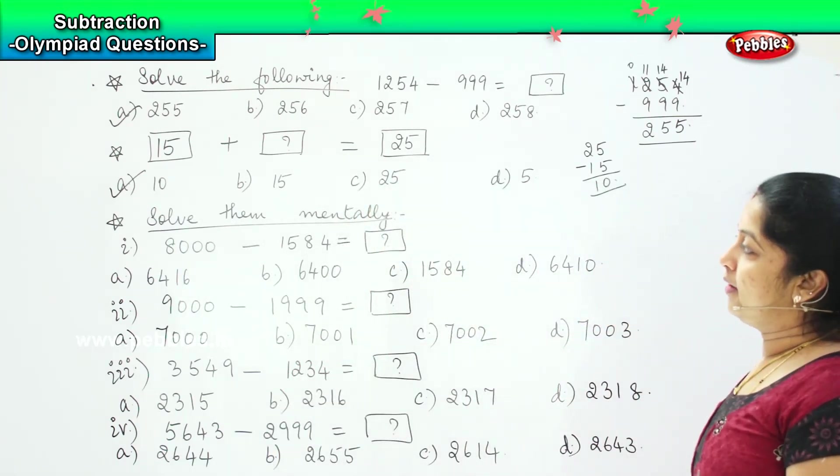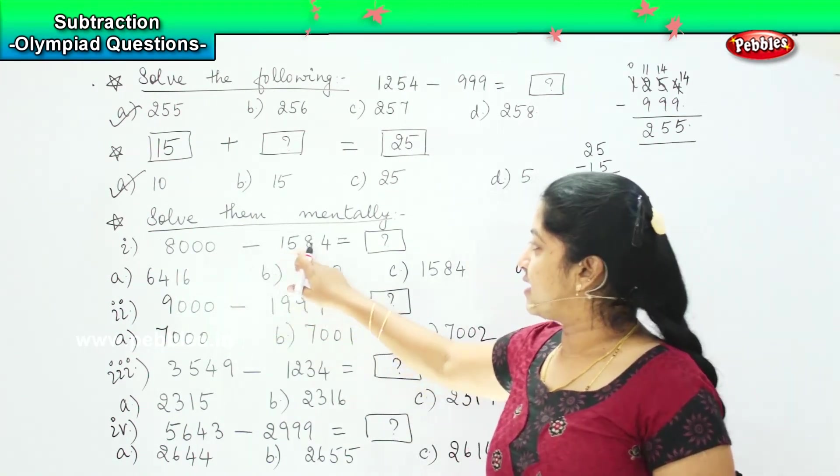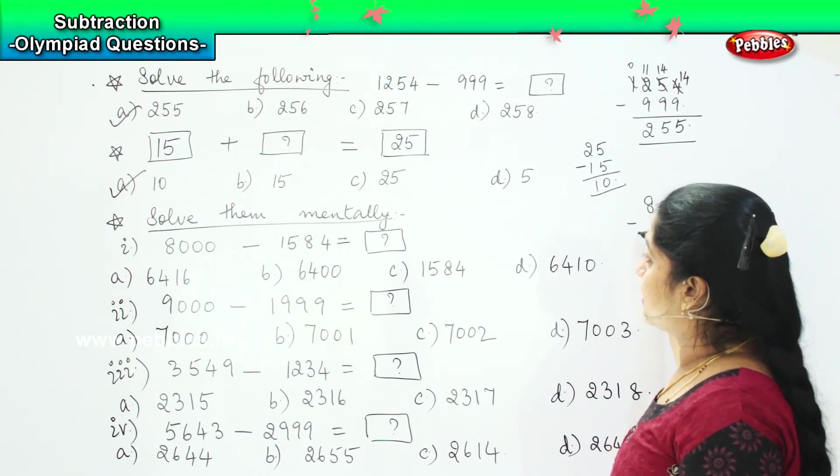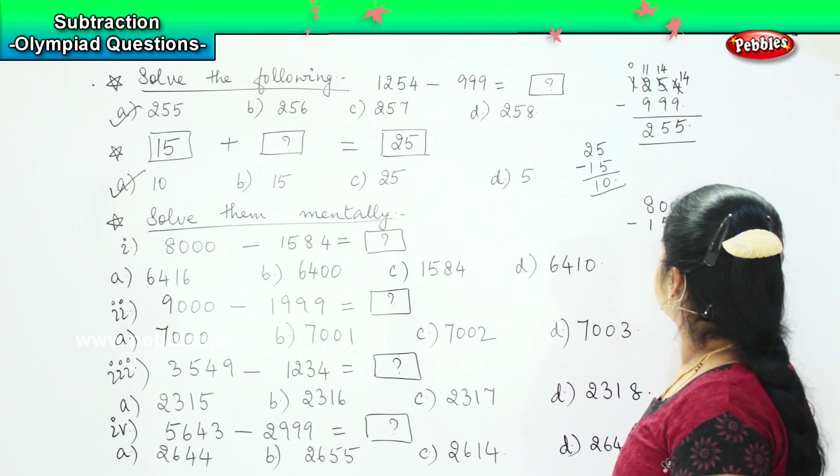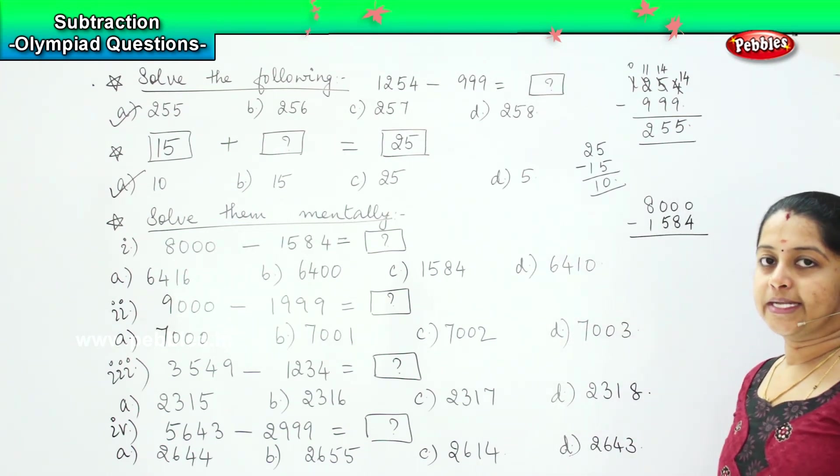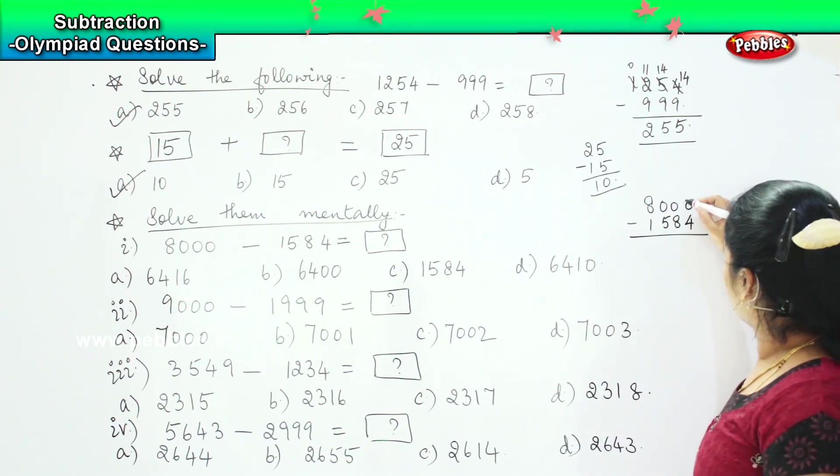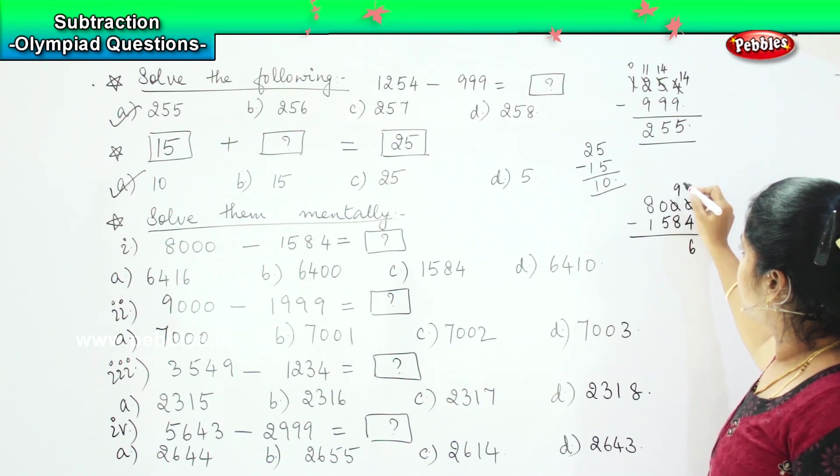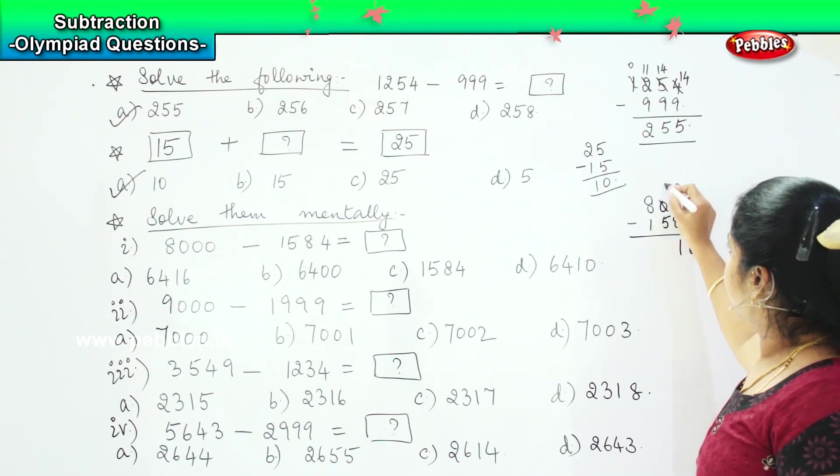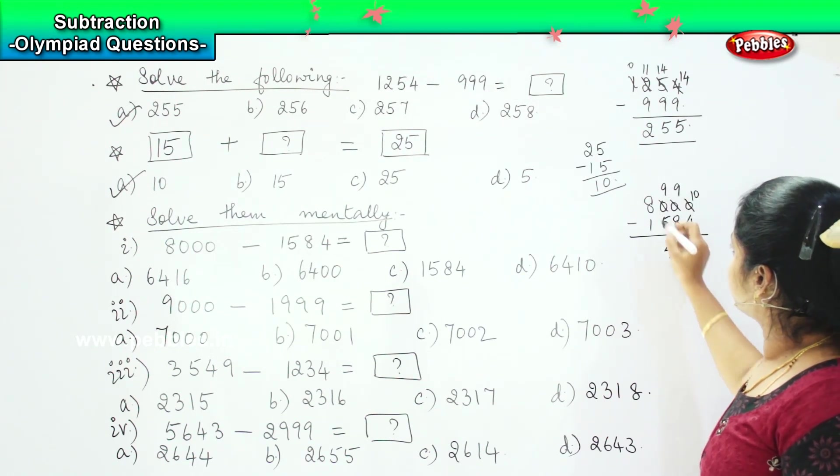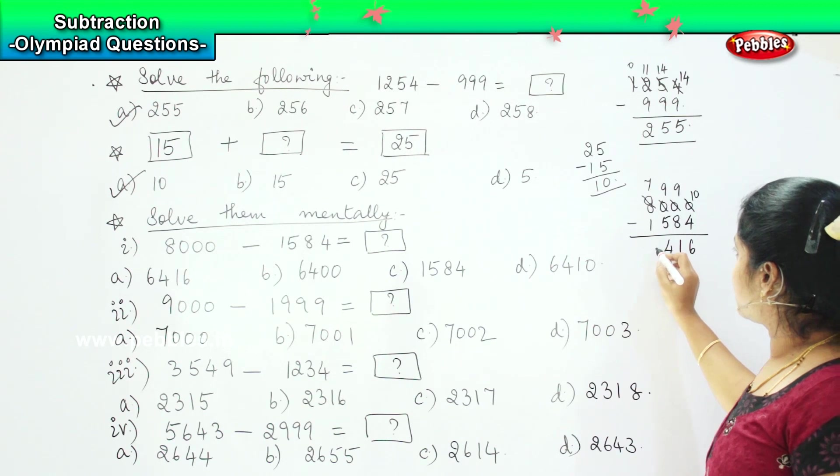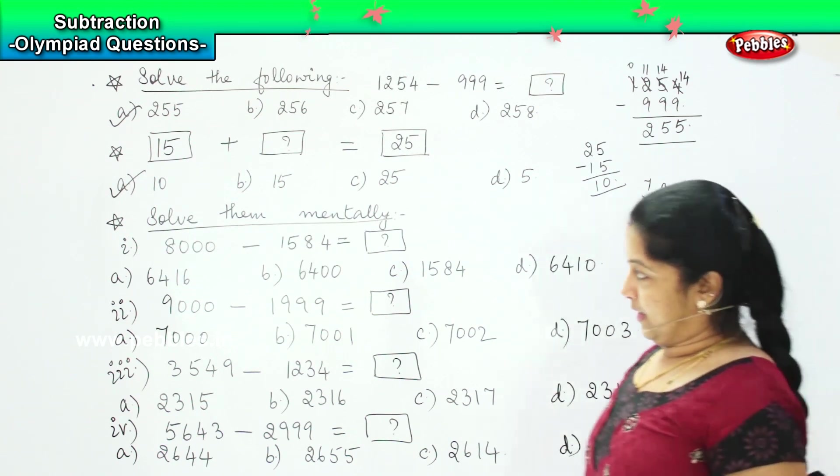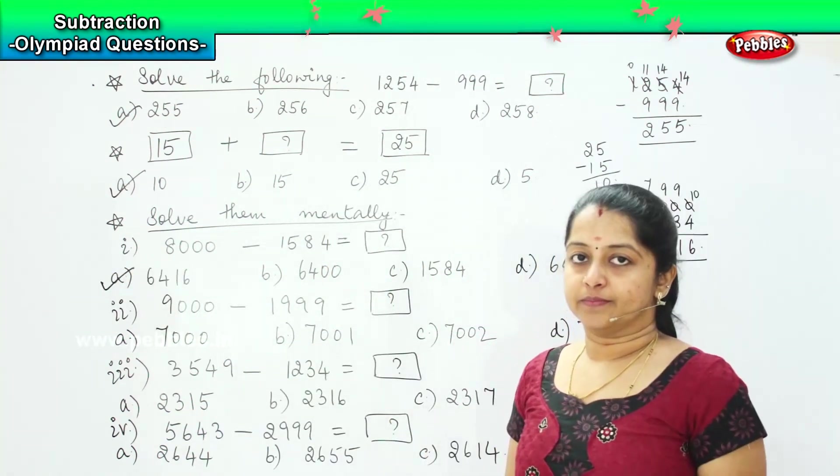So coming to the first one, the first question asks 8000 minus 1584. So it is with regrouping, right? So now, 10 minus 4 is 6. I will borrow here 1. So 9. 9 minus 8 is 1. Again here 9. 9 minus 5 is 4. 7. 7 minus 1 is 6. So my answer is 6416. Where is it? It is option A. Clear?